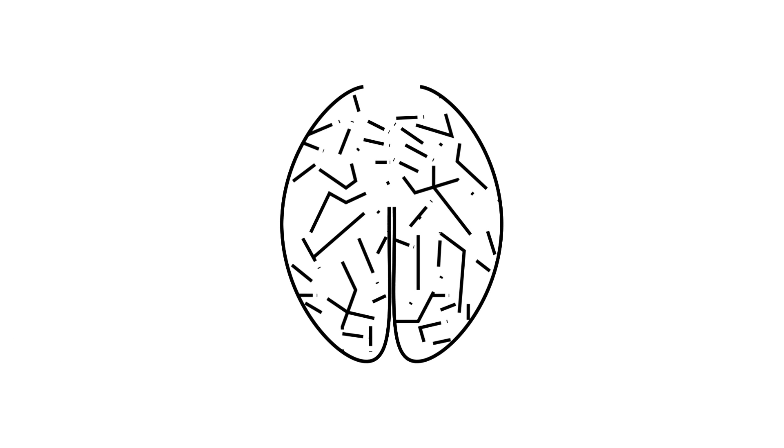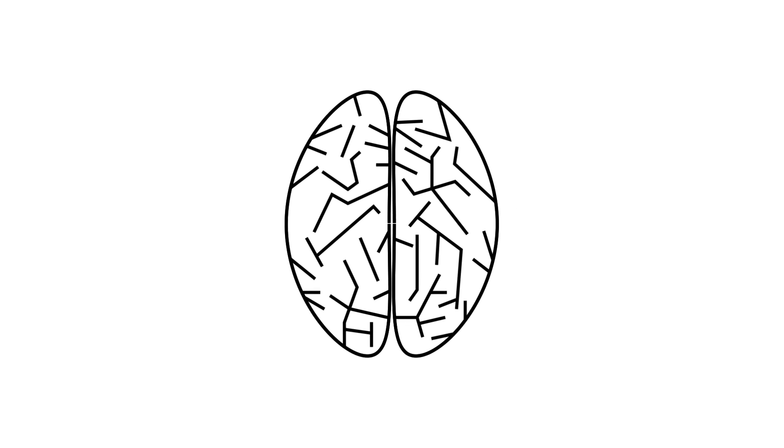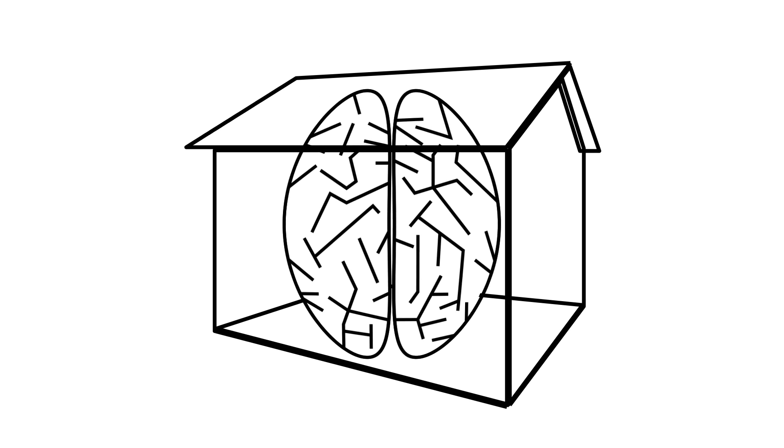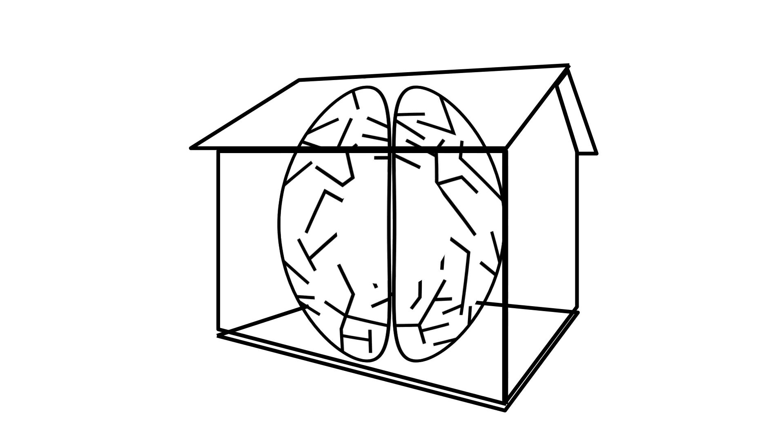People lose neurons in brain regions they stop using. For instance, if you never left your home again, you'd likely lose neurons in the brain region involved in spatial navigation.